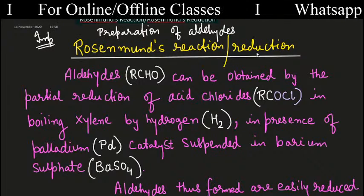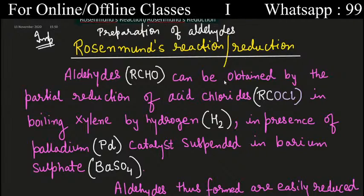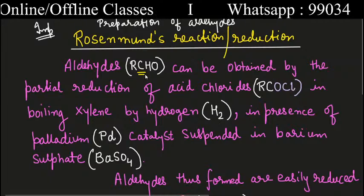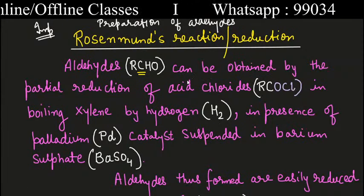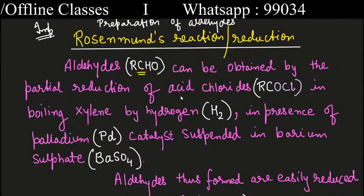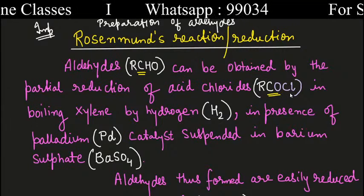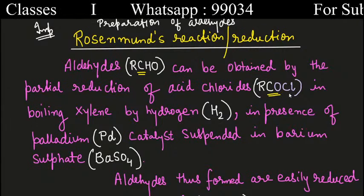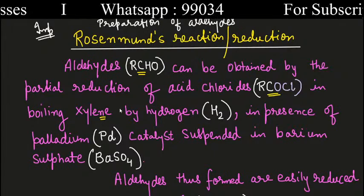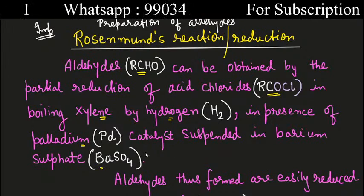What is our Rosenmund reduction reaction? You can see here a definition. What is aldehyde? Aldehyde, RCHO, can be obtained by the partial reduction of acid chloride. What is acid chloride? RCOCl. In presence of boiling xylene — this is just a medium — by hydrogen, in presence of palladium catalyst suspended in barium sulfate.